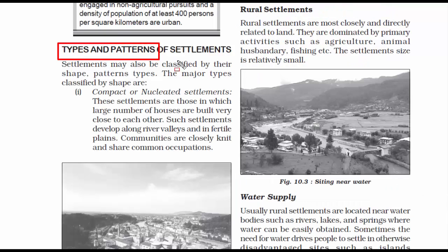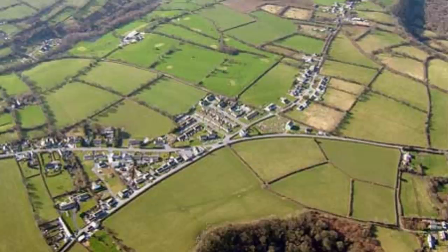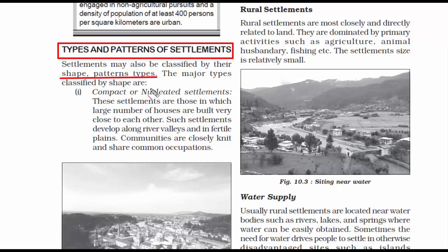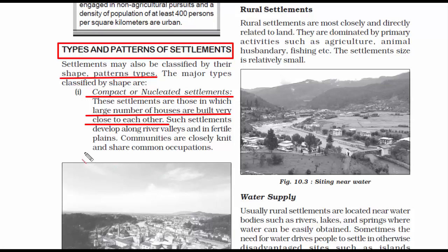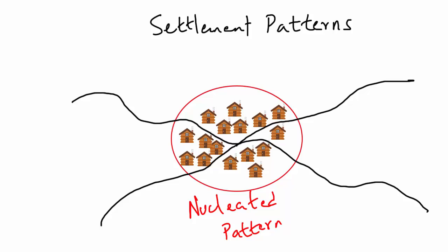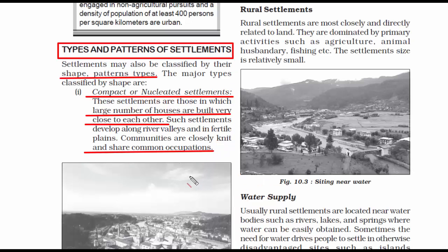Now we go to the topic of types and patterns of settlements. If you were to travel in a plane and see a town, village, or city from above, you would see a particular shape or pattern in which houses are constructed. Broadly, they are classified into two types. The first is compact or nucleated settlement, where houses are constructed close to each other — sometimes so close you can touch the neighboring wall. The word nucleated comes from nuclear family, meaning a small compact group. Buildings are very close, like a cluster or colony.